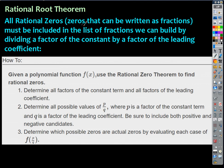That leads us to something pretty cool — the Rational Root Theorem. All of the rational zeros of a polynomial can be written as a fraction where the numerator is a factor of the constant term and the denominator is a factor of the leading coefficient.